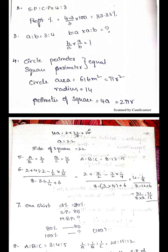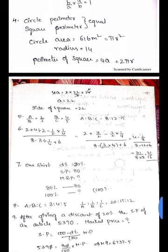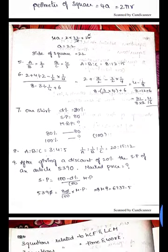Using r equals 14, perimeter of square is 4a, which equals 2πr. Substitute r value to find the side of the square, which is 22.